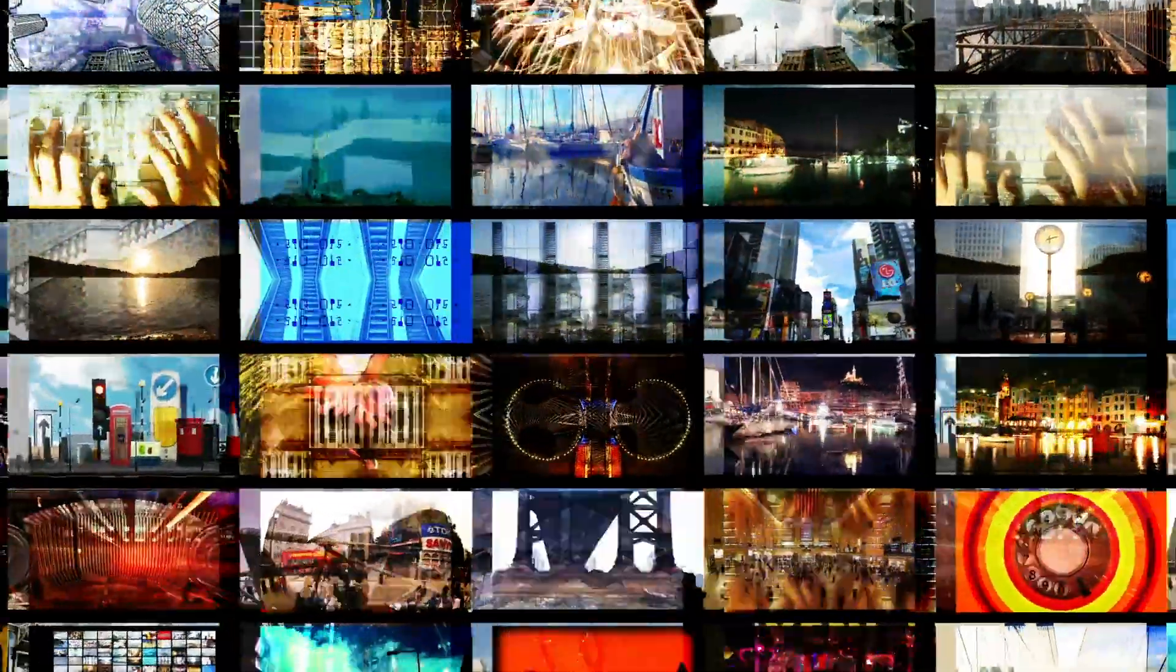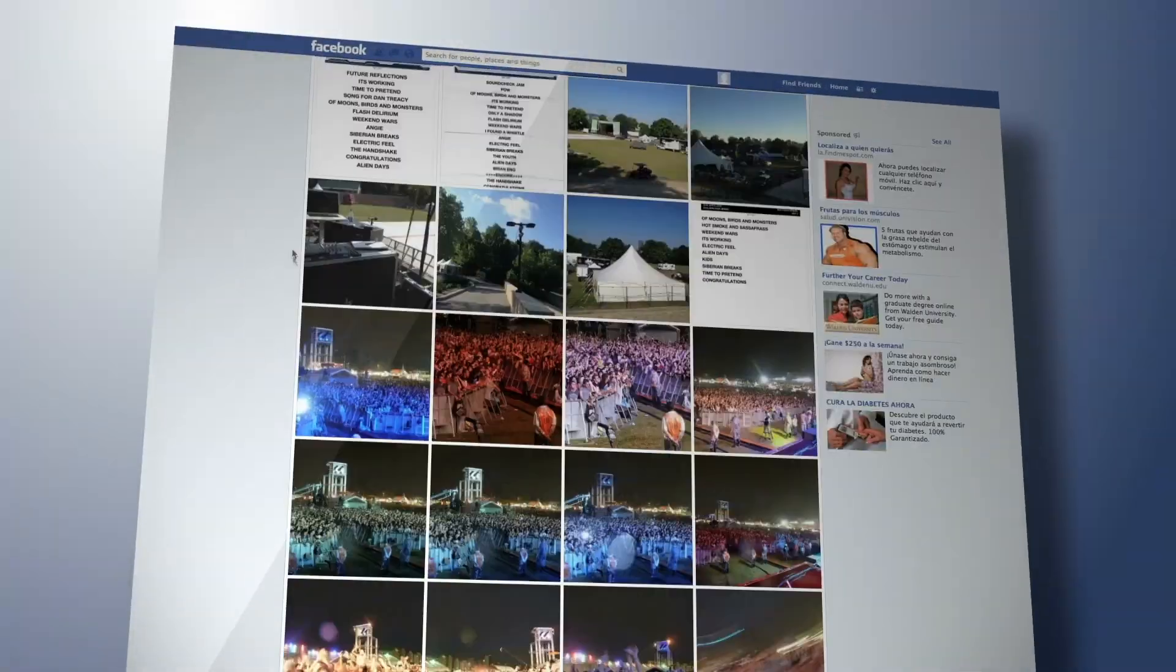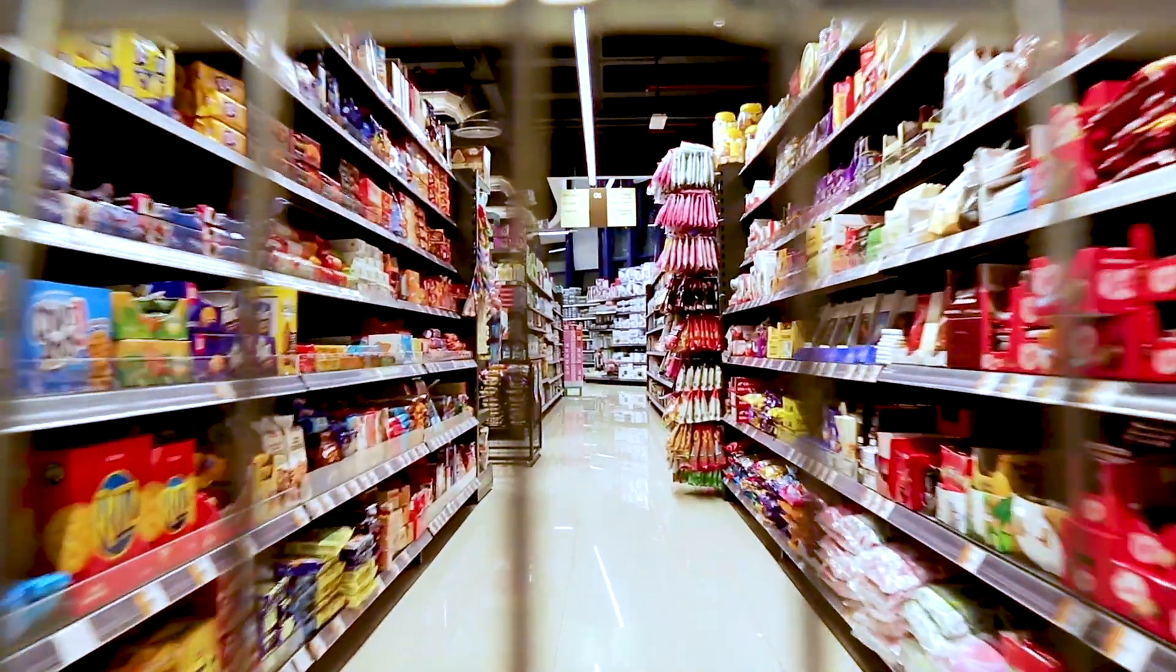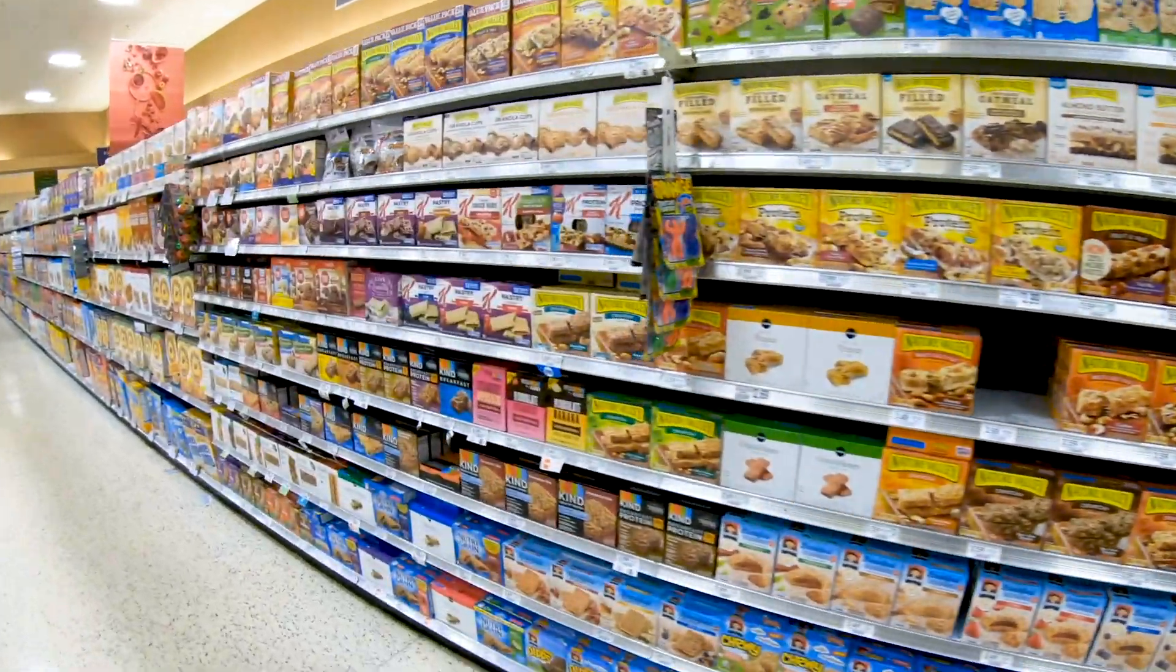Computer vision is a field of understanding natural images and video. Applications include finding your company logo on social media or counting specific types of products in supermarket shelves.